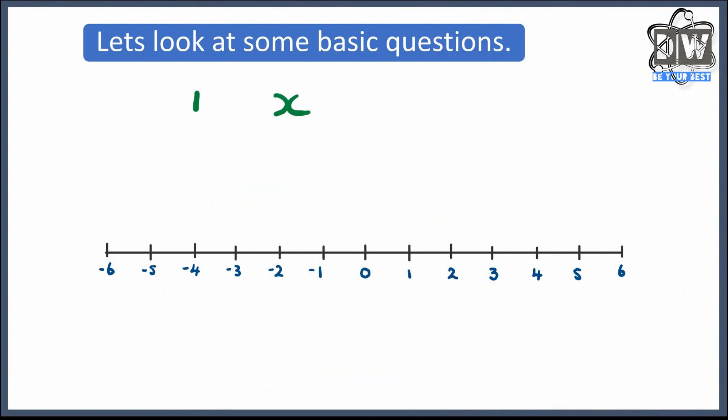Give this one a go. So we've got x is bigger than or equal to minus 1 and also smaller than or equal to 4. First things first: put a shaded circle on minus 1 because it's equal to, put a shaded circle on 4 because it's equal to, and then link the two together.